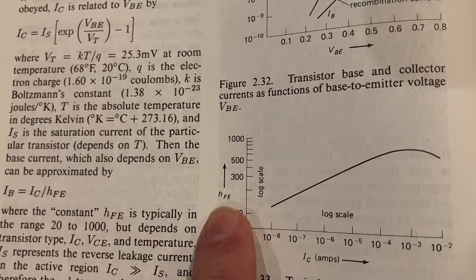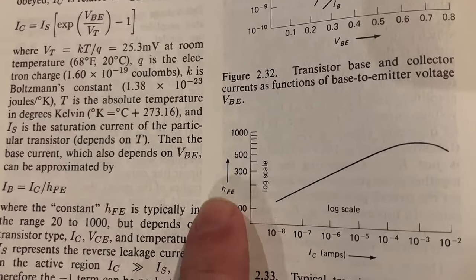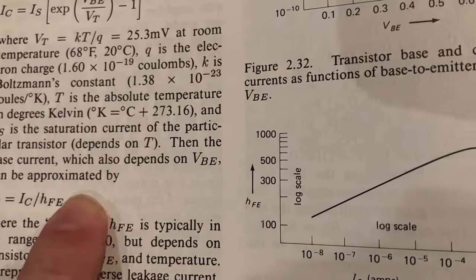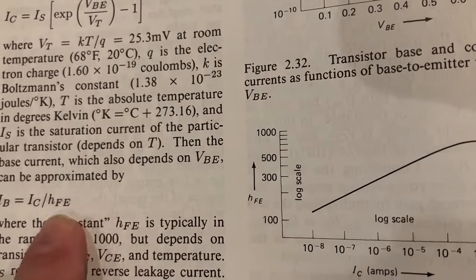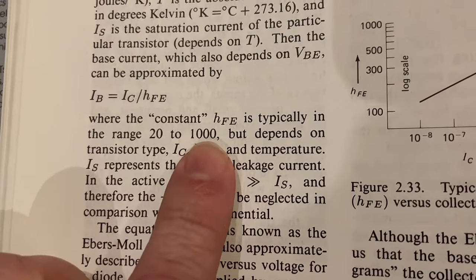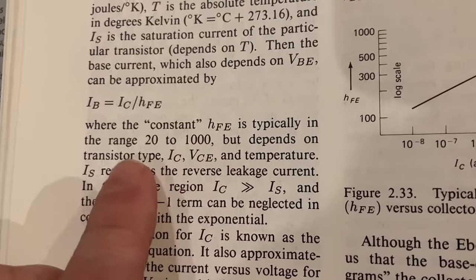This HFE, this thing that corresponds to beta, this itself is actually a function of the collector current. So there's kind of really a parentheses IC here.